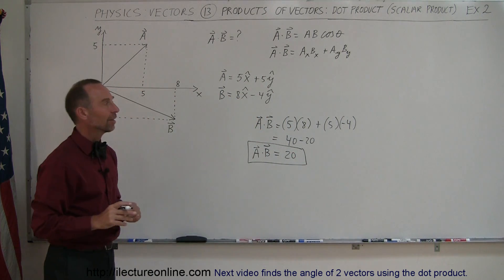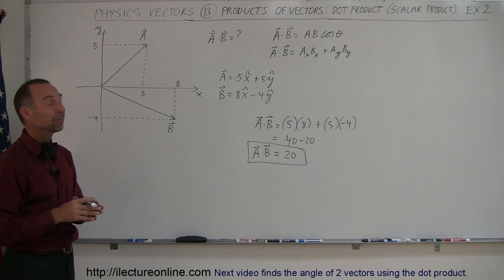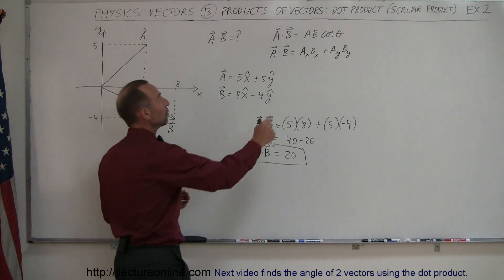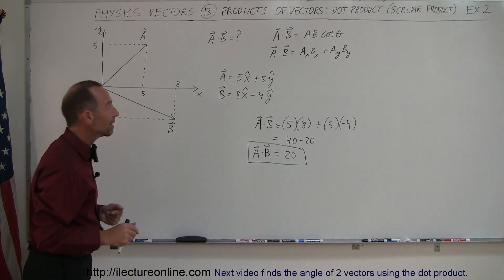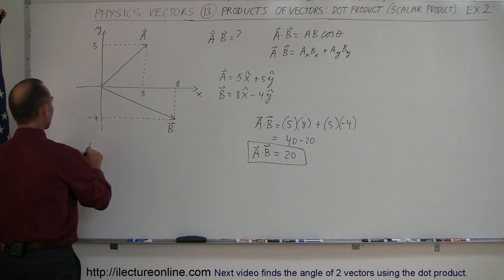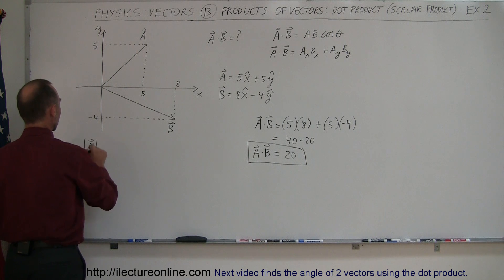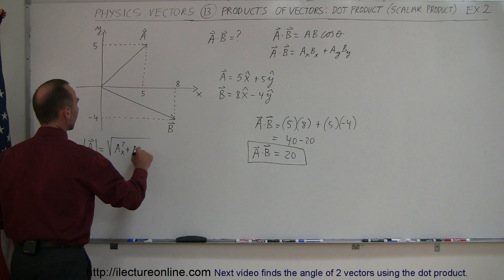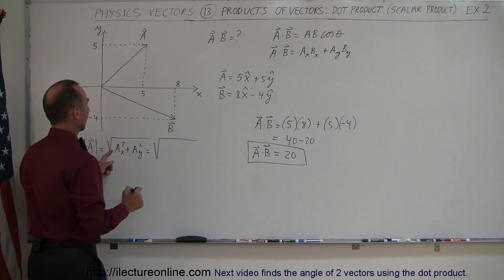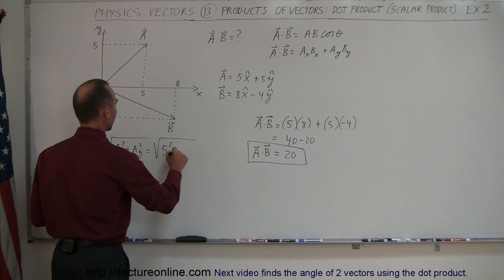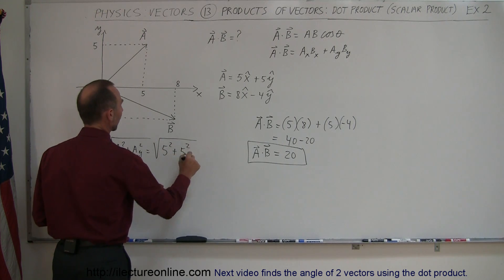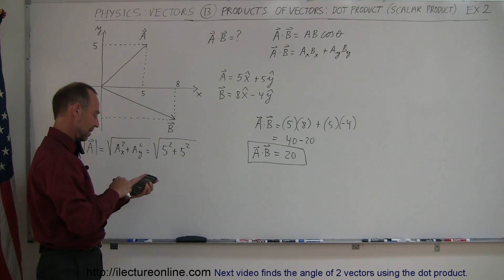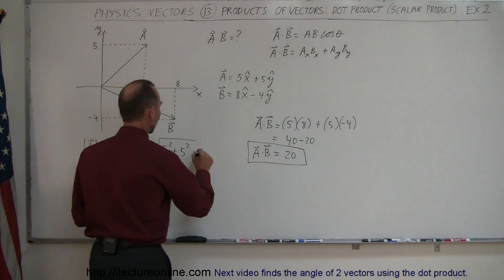Now let's find the magnitudes of these two vectors and the angle between them to verify using the first method. The magnitude of A is equal to the square root of the X component squared plus the Y component squared. That's the square root of 5 squared plus 5 squared, which is the square root of 25 plus 25, equaling the square root of 50.